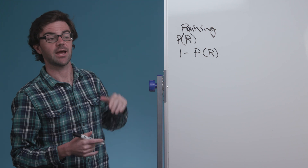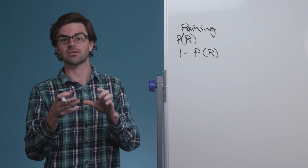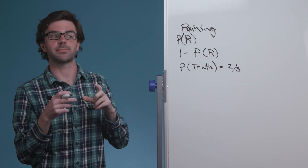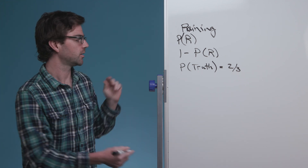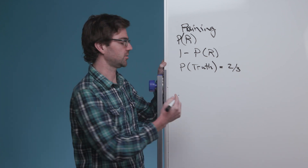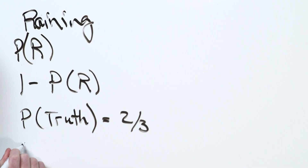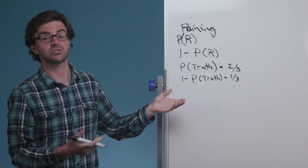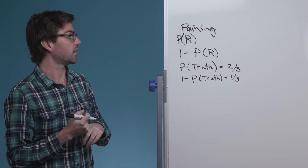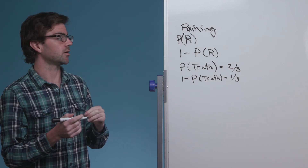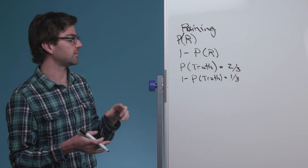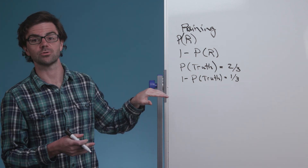The second part is what your friends are telling you — is it true or not? For each friend, there's a two-thirds chance they're telling you the truth and a one-third chance they're lying. What we want to know is the probability that it's actually raining given that all three told you yes.